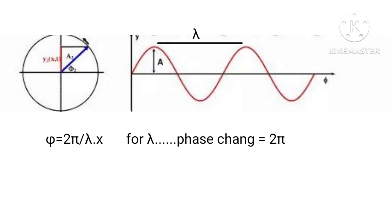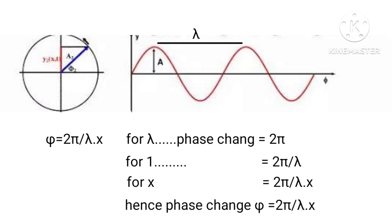For λ, phase change equals 2π. For 1, equals 2π upon λ. For X, equals 2π upon λ times X. Hence phase change φ equals 2π upon λ times X.